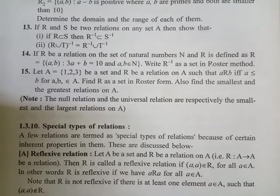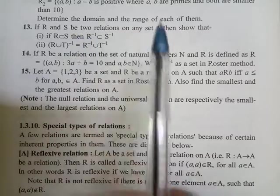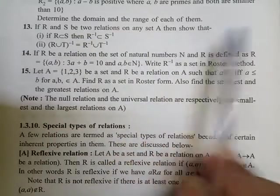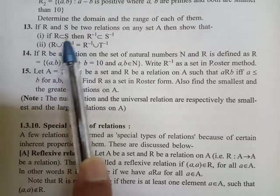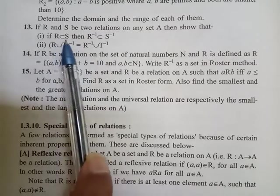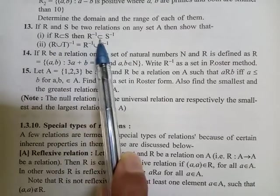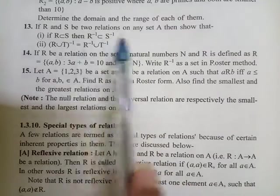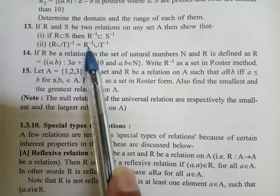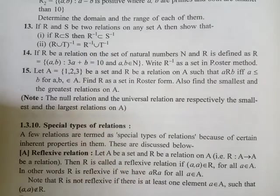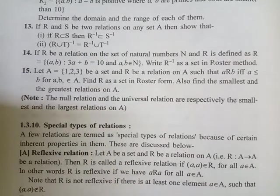Students, let's solve question number 13. If R and S be the two relations on any set A, then show that: if R is included in S, then R inverse is also included in S inverse; and (R union T) whole inverse equals R inverse union T inverse. We have to solve these two questions.